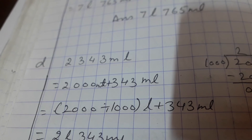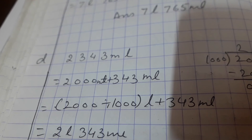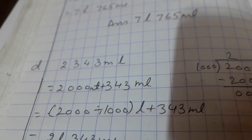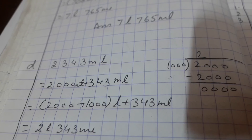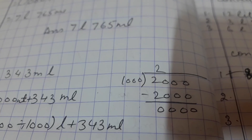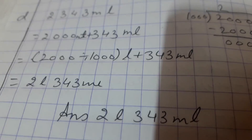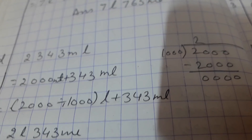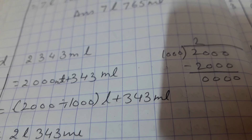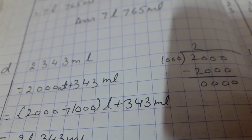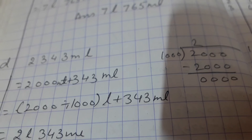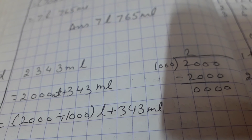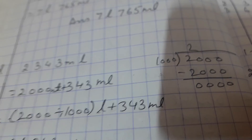The next question is 2343 milliliters. We separate it as 2000 milliliters plus 343 milliliters. 2000 milliliters divided by 1000 gives 2, and 343 milliliters is copied as it is. So the answer is 2 liters and 343 milliliters. You will do all these questions in your copy. I hope you have understood how to convert liters into milliliters and milliliters into liters.